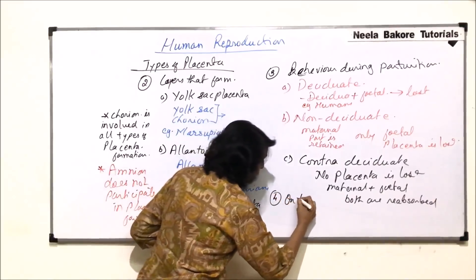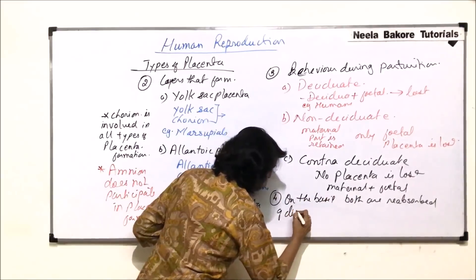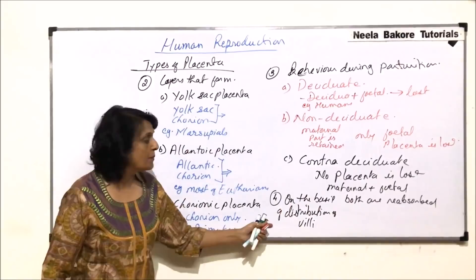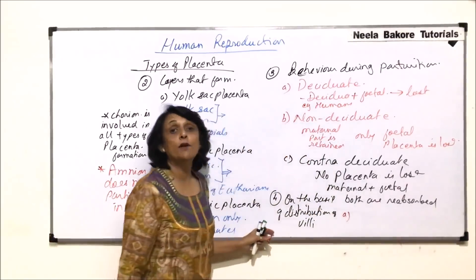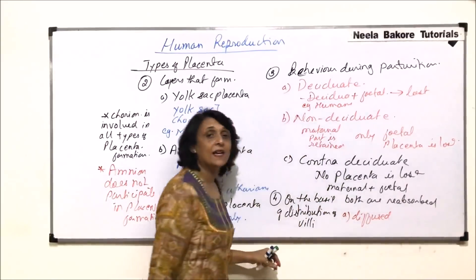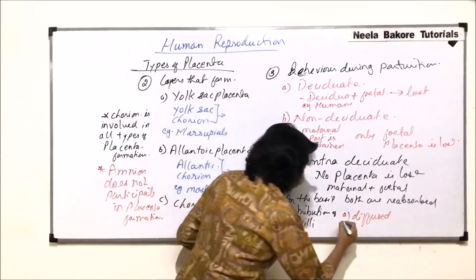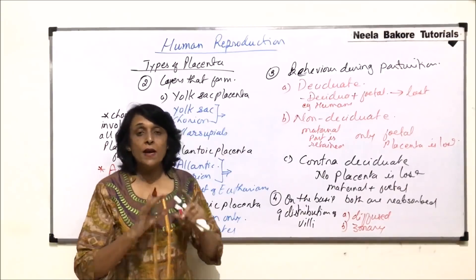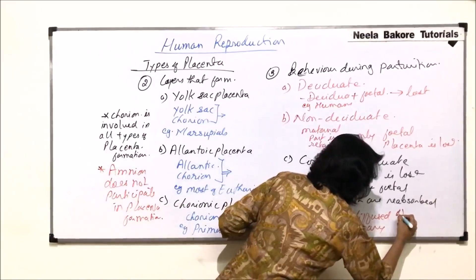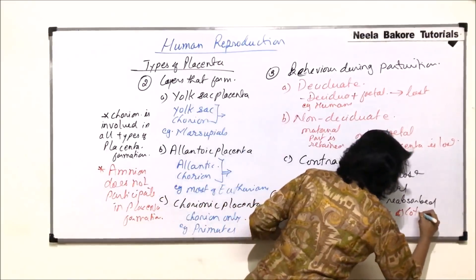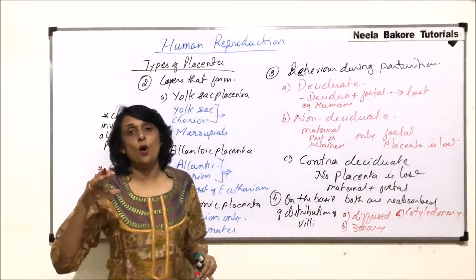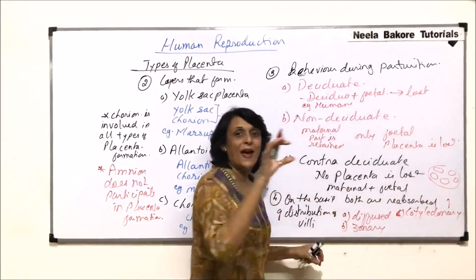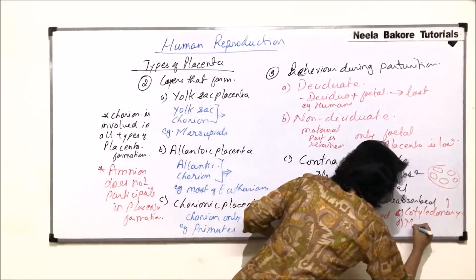A fourth way of classification is on the basis of distribution of villi — how the villi are distributed on the embryo. First is diffuse placenta, where the villi are scattered all over. Second is zonary placenta, where there is a band-like structure where villi are formed and all other parts are without villi. Third is cotyledonary placenta, where there are patches of villi distributed across the embryo.